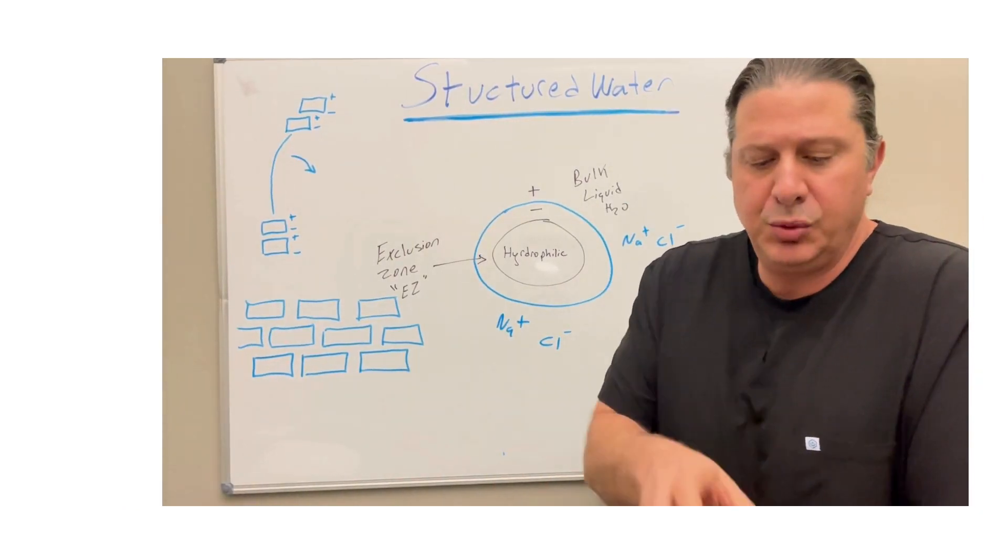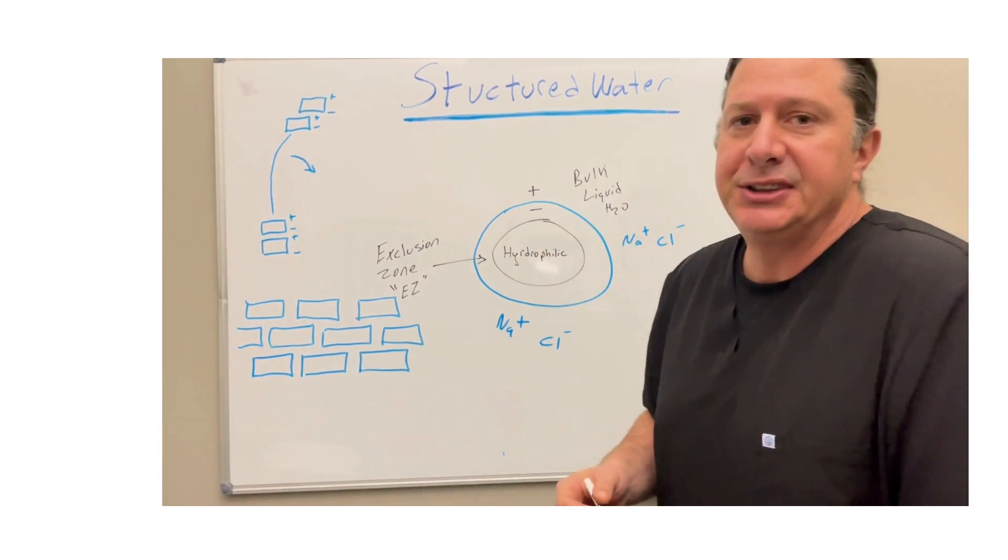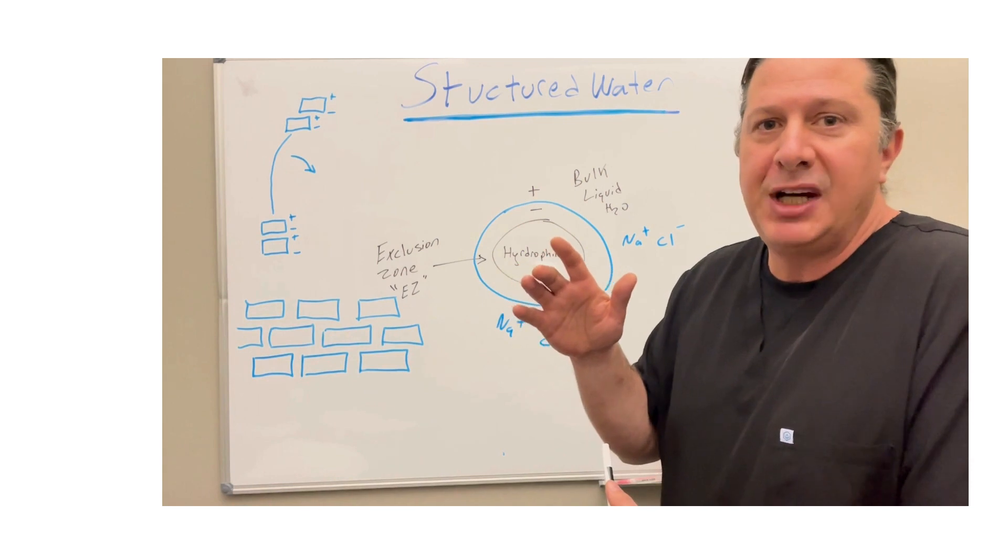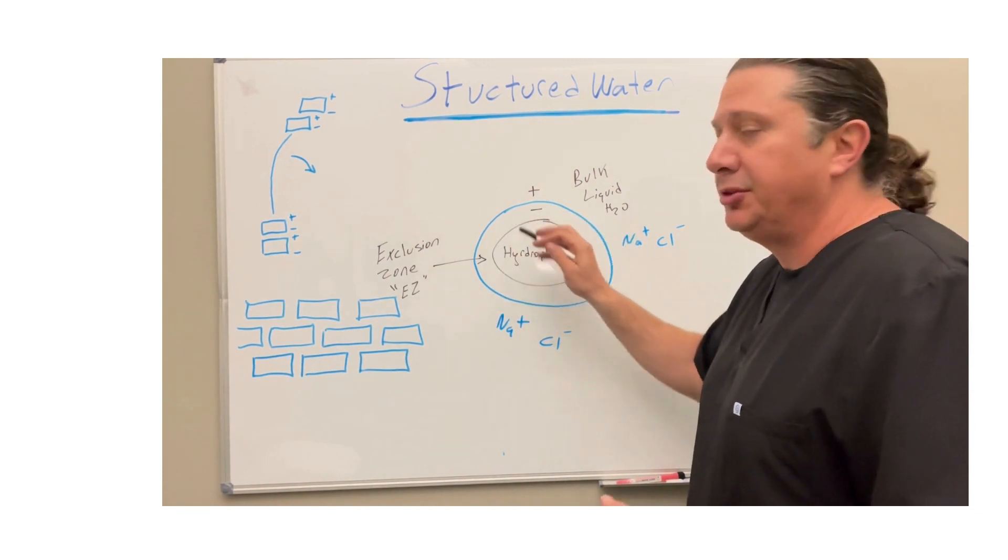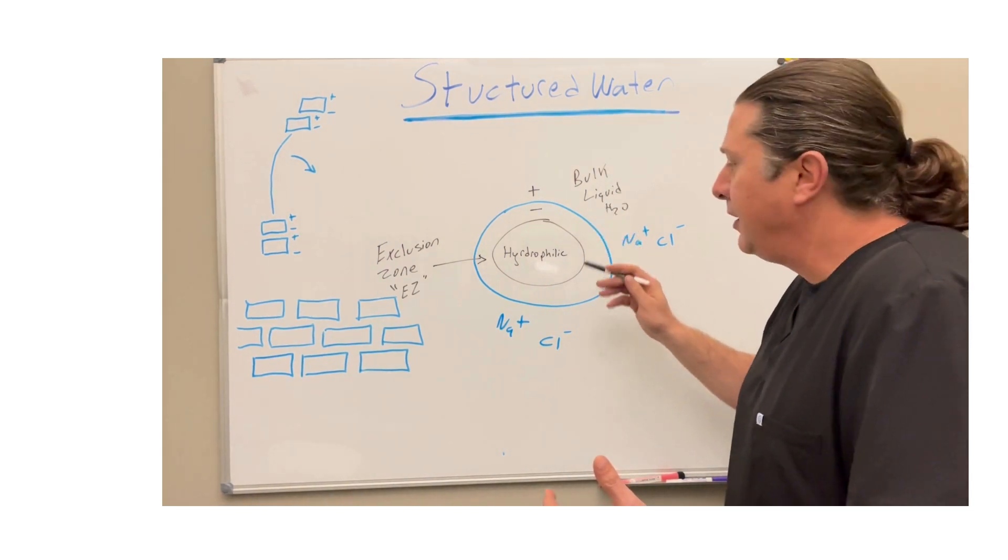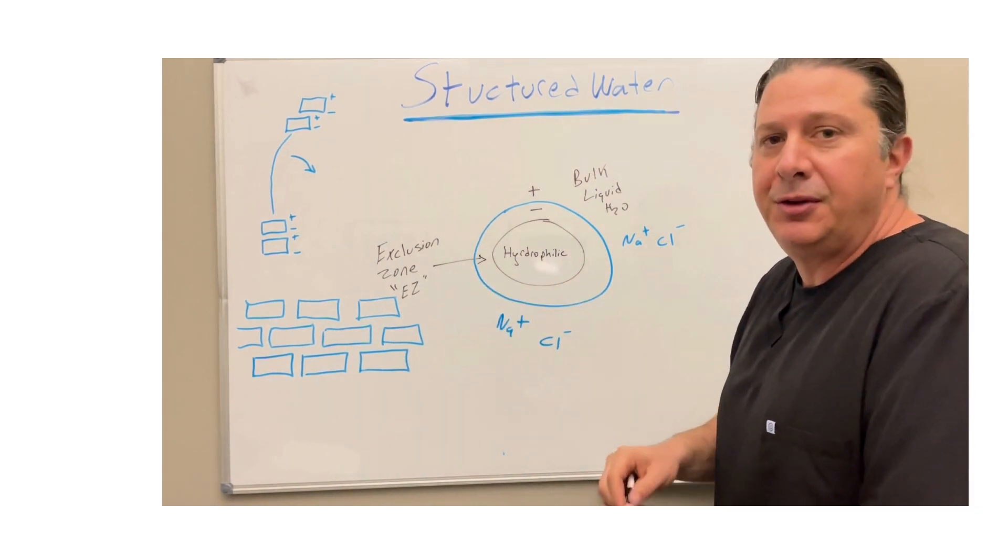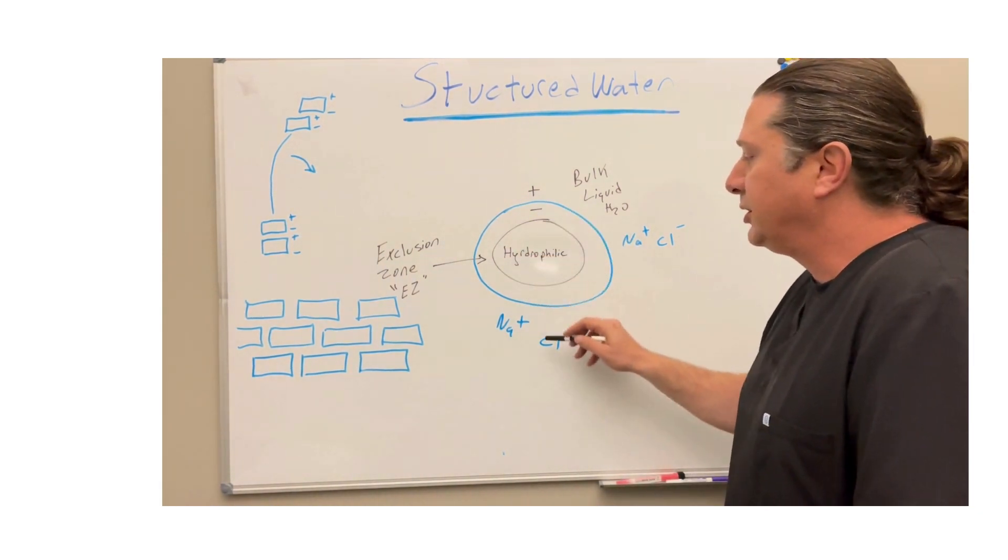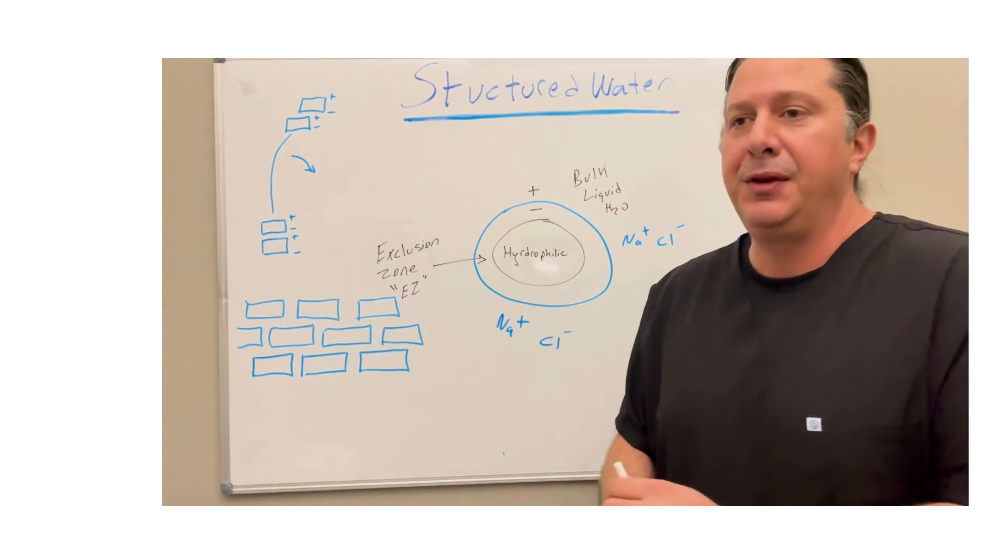Structured water was discovered when they found that if you took a hydrophilic substance - something that likes water and attracts it versus hydrophobic which repels it - something interesting would happen around the perimeter. If the liquid water had sodium chloride in it, the sodium and the chloride would be repelled from this area. They called it the exclusion zone. EZ water is another name for structured water. This area at the periphery would exclude that. It wouldn't allow the sodium and chloride in. It would just be pure water.